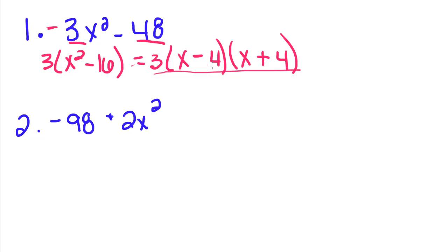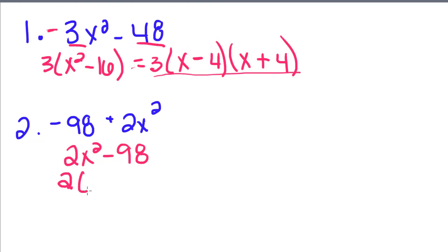This next one might not look like a perfect difference of squares. But if you change the order around so that the variable is on the left side, this becomes 2x squared minus 98. And just like we did with the first one, we're going to factor out that 2. We get x squared minus 49.